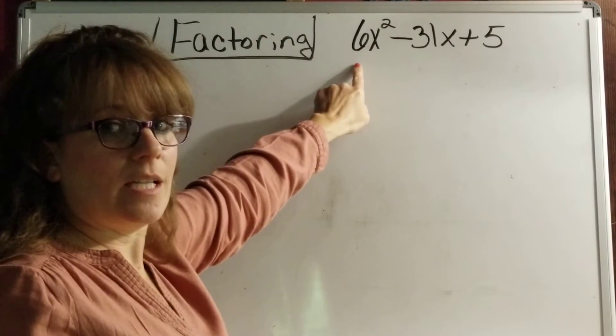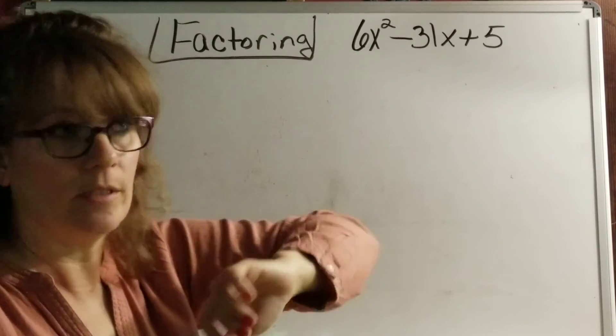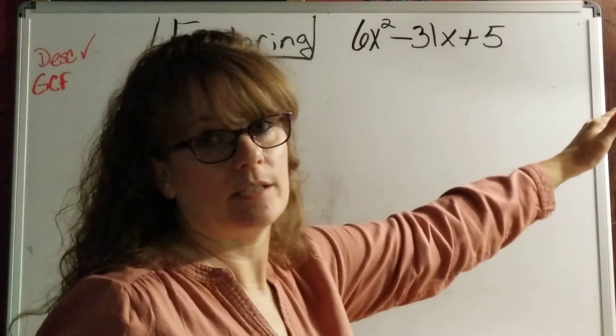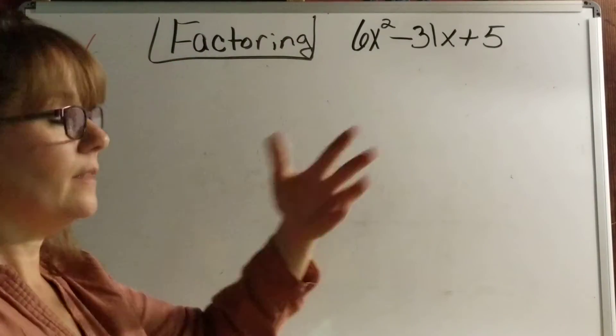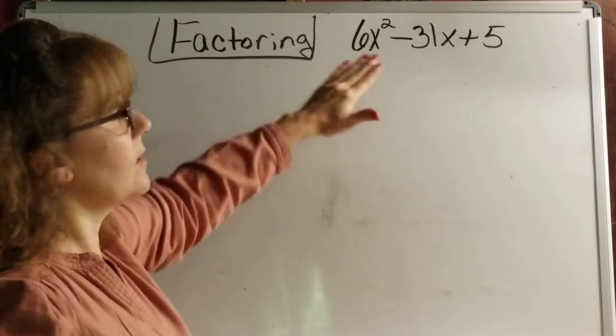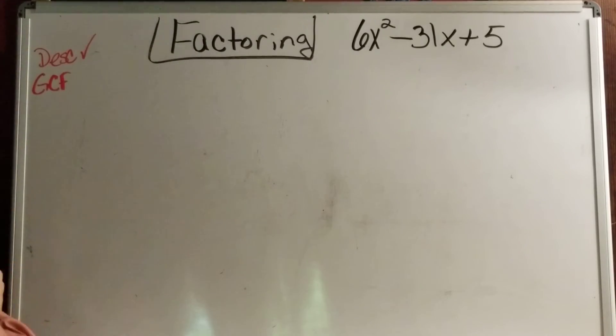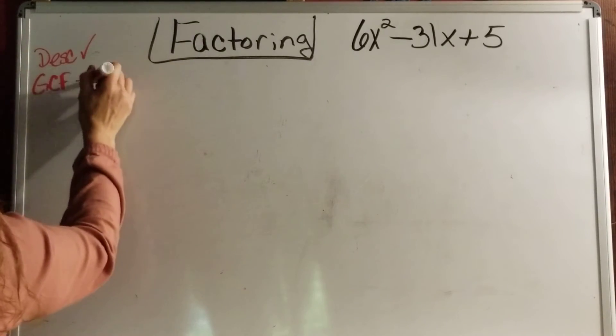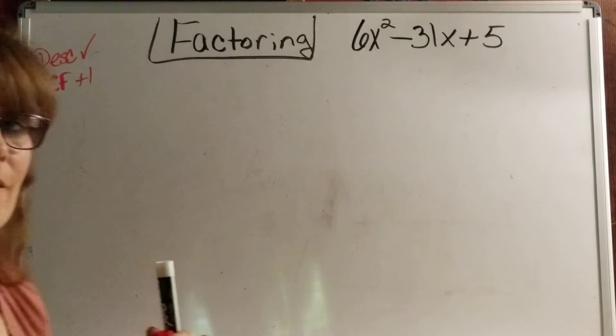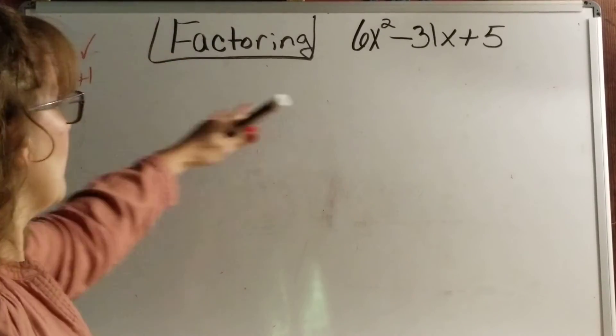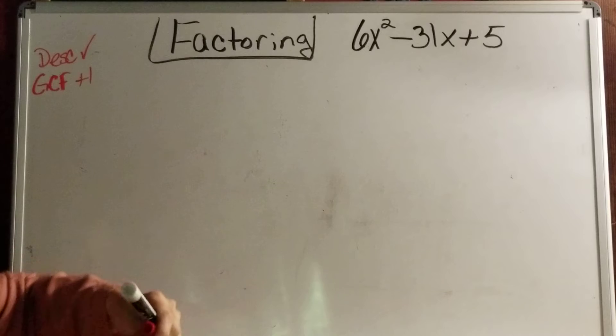So my GCF here is a positive 1. How do I know it's positive? Because this first term here is positive. If the first term was negative, then I would have said negative 1. But in this case, it worked out great. It's a positive 1. So I'm just going to make my little side note, positive 1. So once I have that established, I'm going to rewrite this.